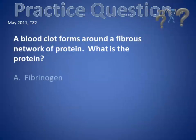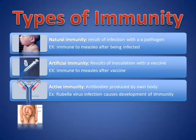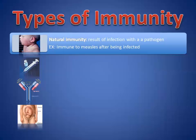Natural immunity is just that — you can guess from the term. It means you get the infection naturally: the pathogen gets into your body somehow, it doesn't kill you, and after you've gotten sick once, you're not going to get sick again. You've heard about this through chicken pox.